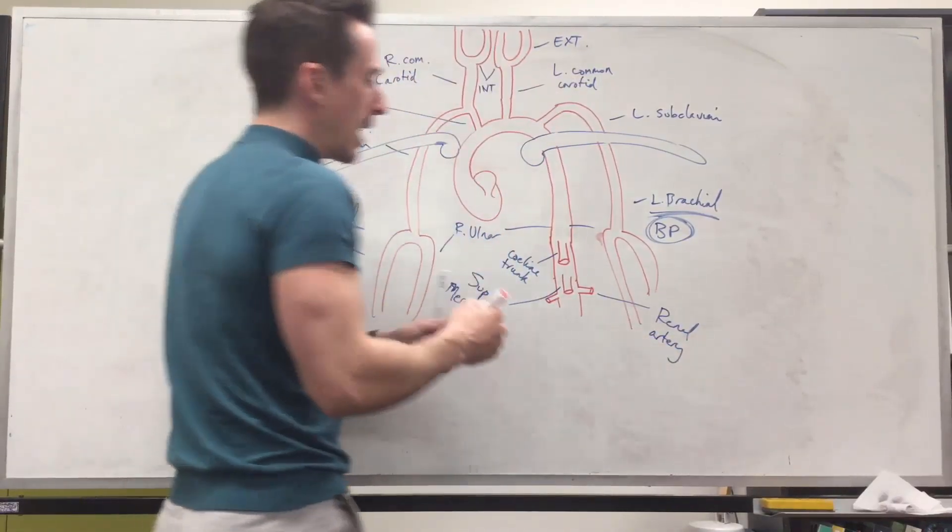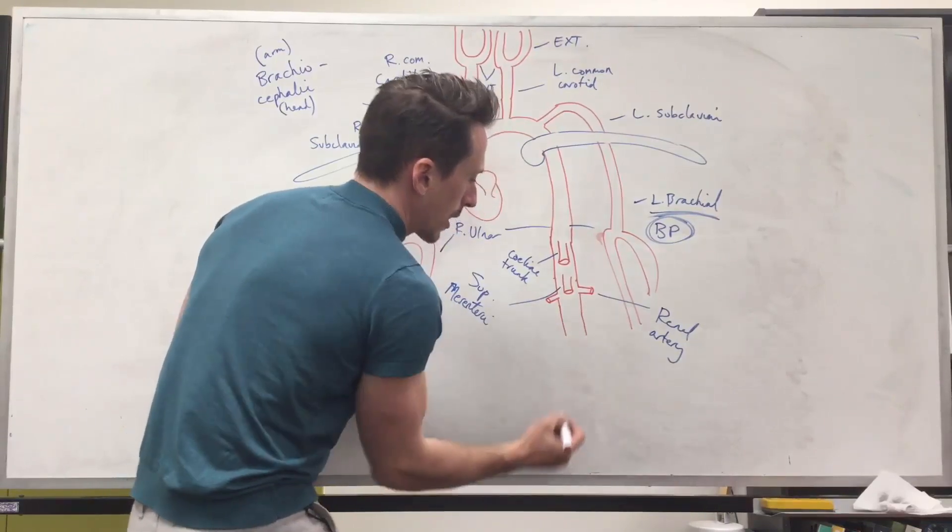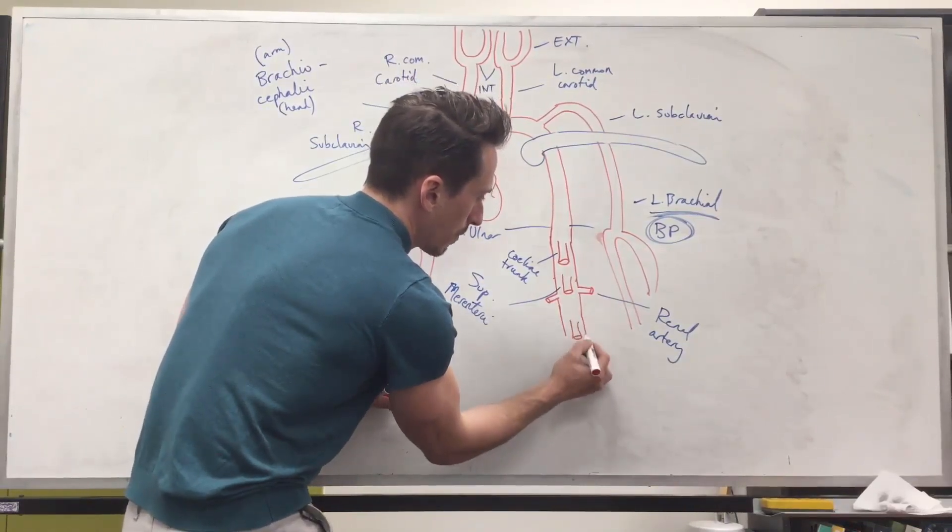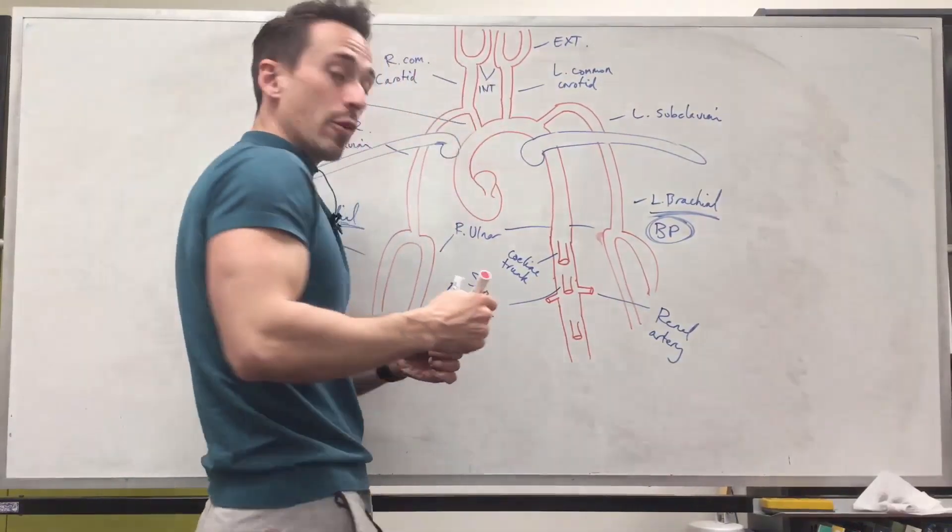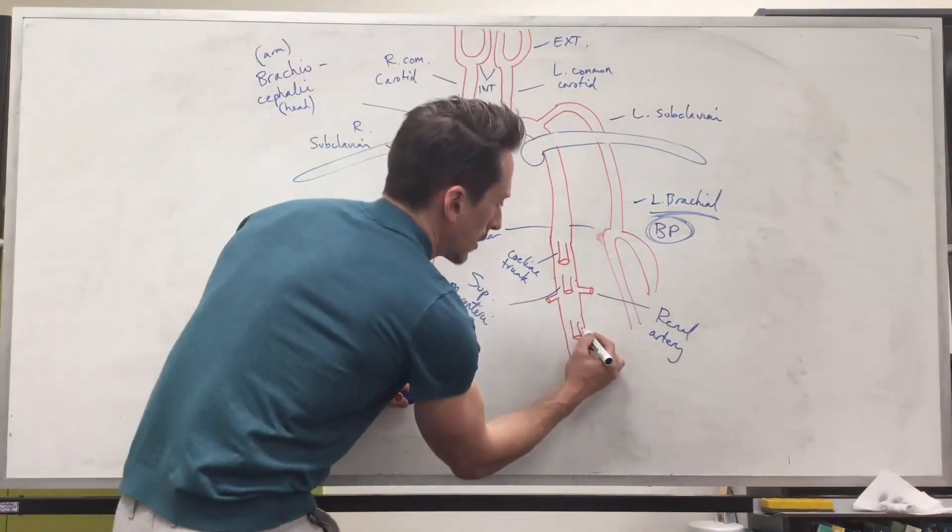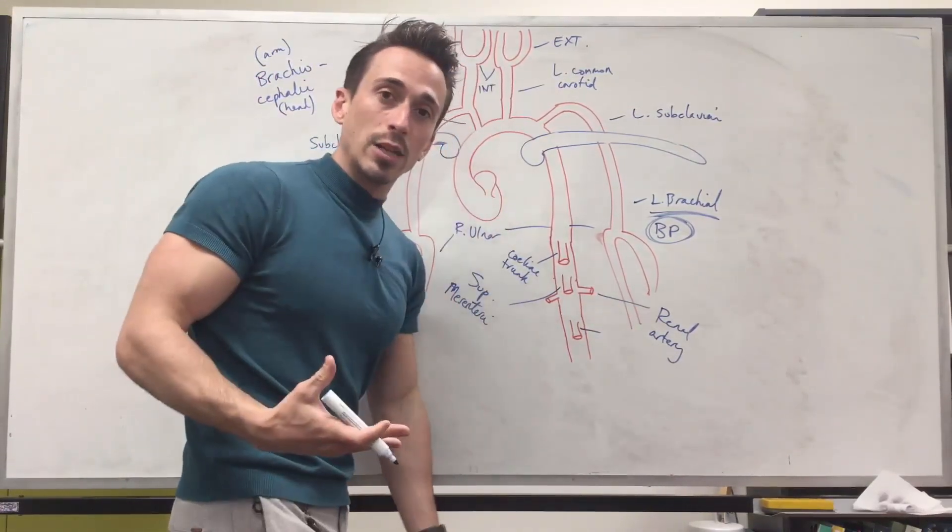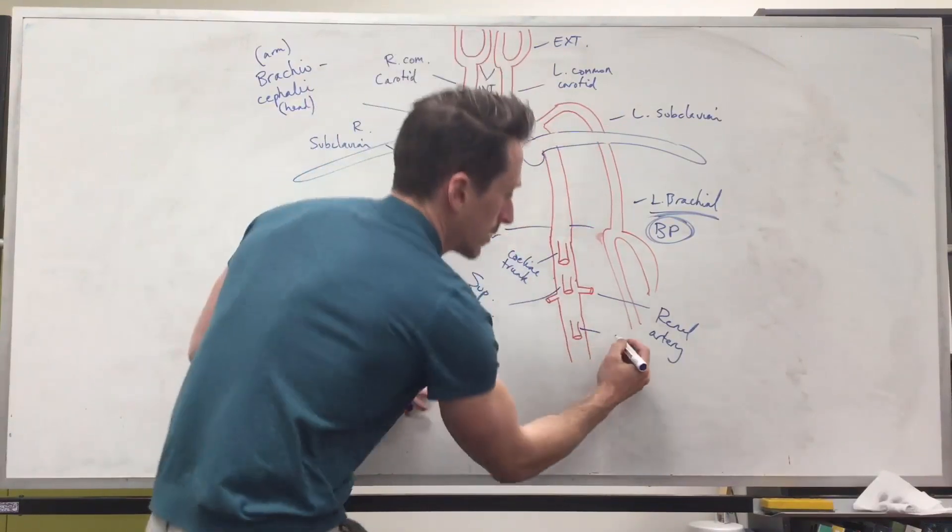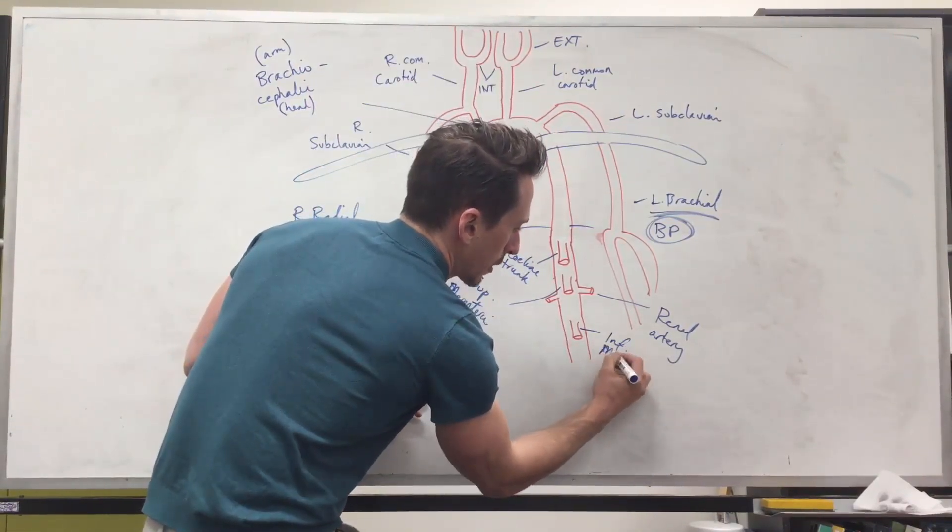Then below that we're going to have the inferior mesenteric artery and the inferior mesenteric artery going to give blood to the rest of the large intestines rectum up to anus.